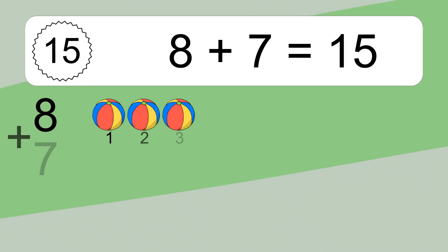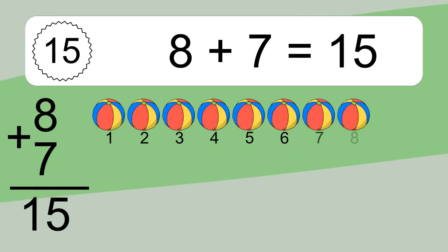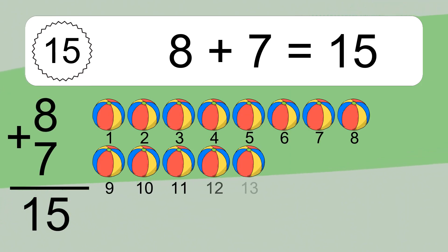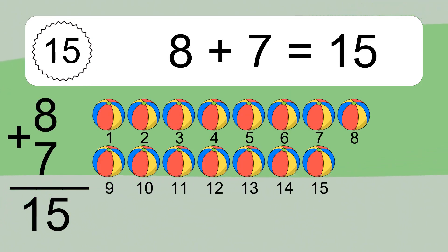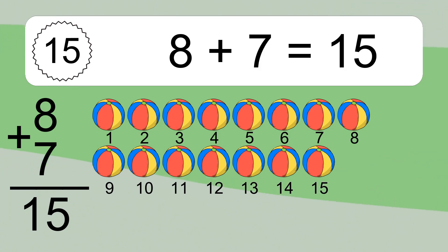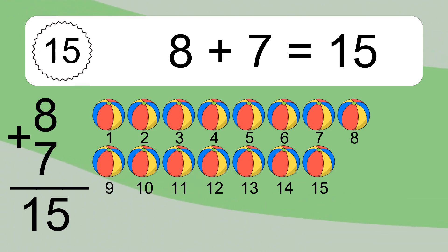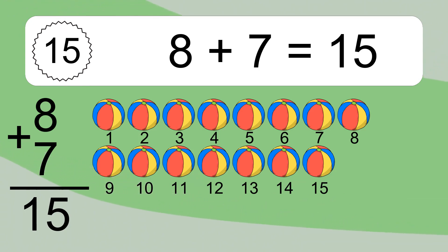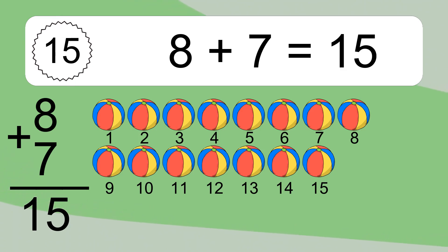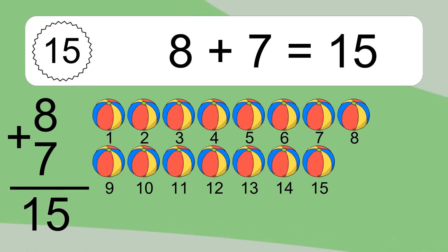8 plus 7 equals what? 8 plus 7 equals 15. Let's count it: 1, 2, 3, 4, 5, 6, 7, 8, 9, 10, 11, 12, 13, 14, 15.